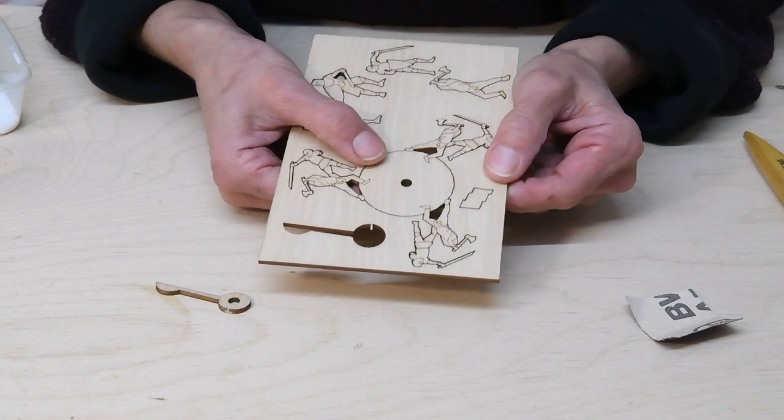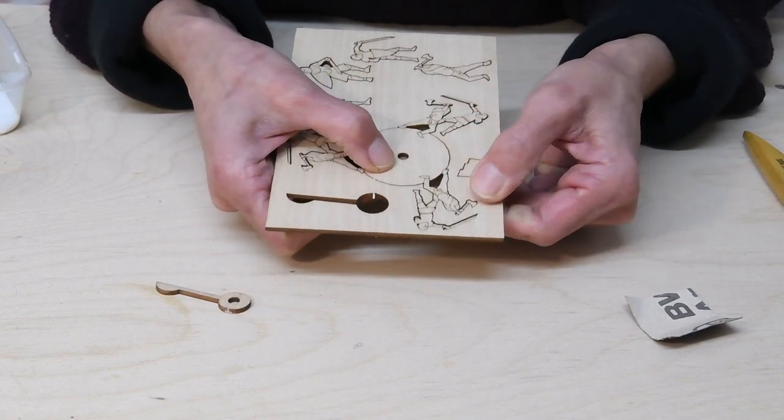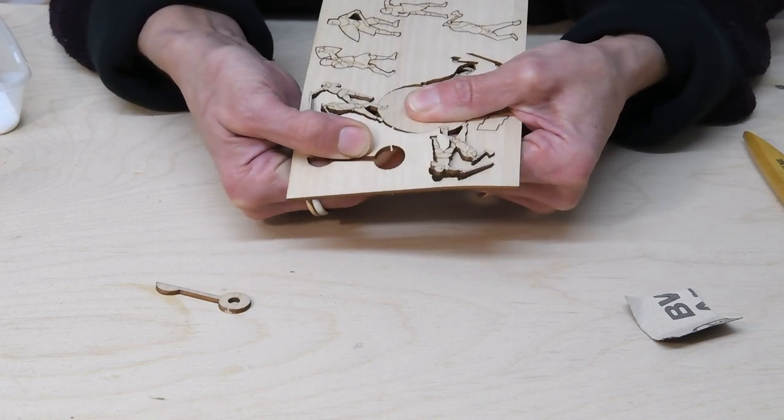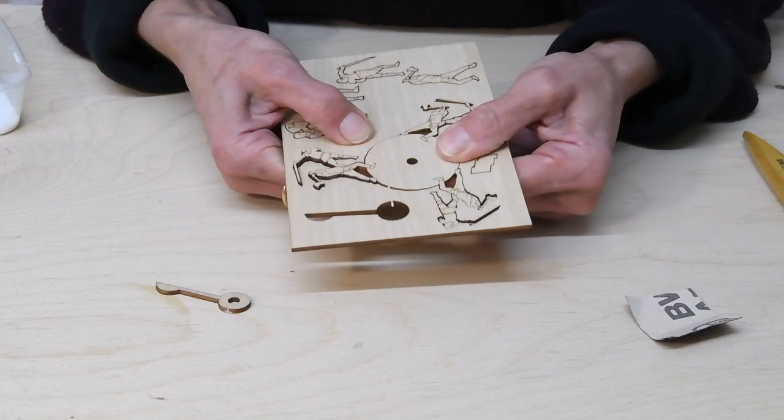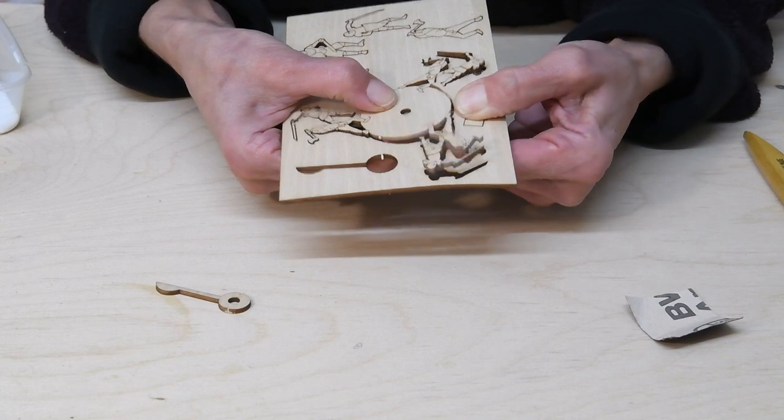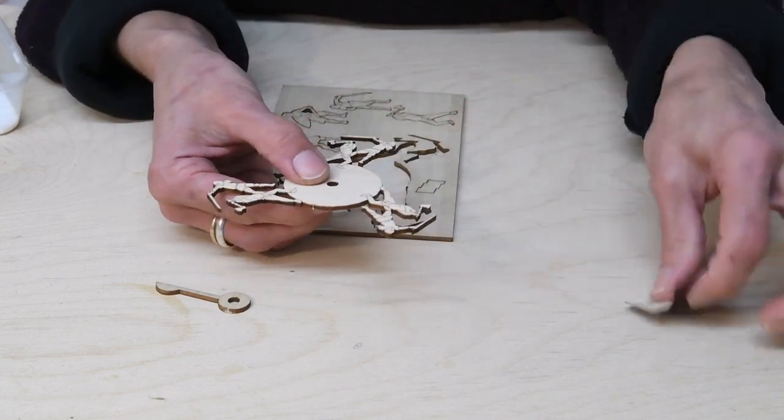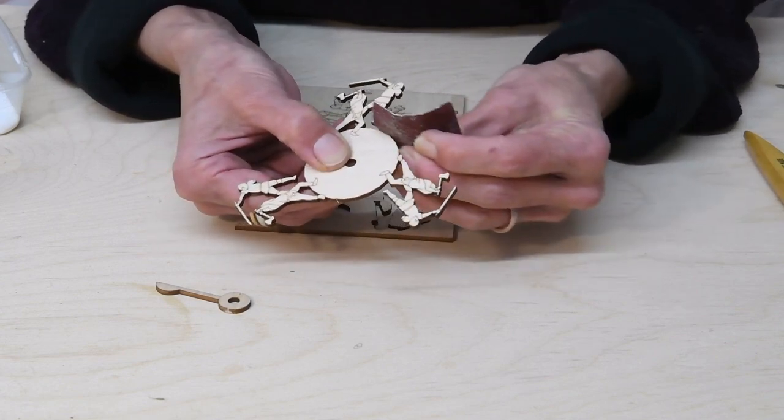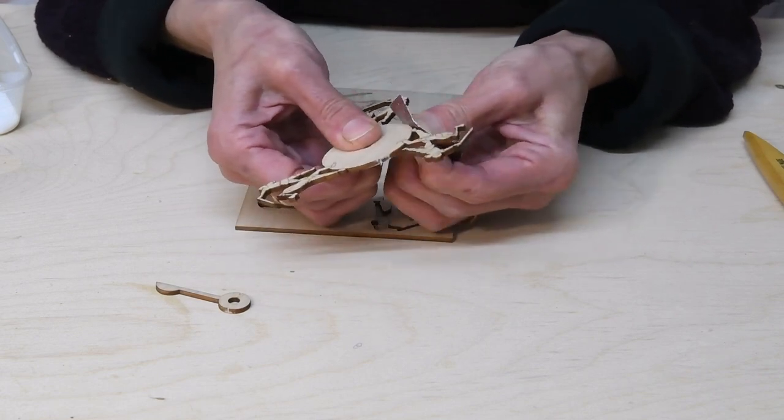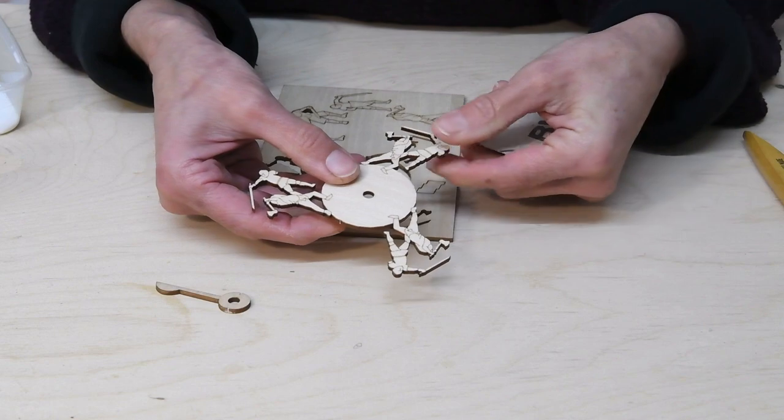This piece with the fighting soldiers is particularly delicate because their swords and axes are very thin so just be really careful how they come out. And once they are out keep them out of harm's way so they don't get snapped.